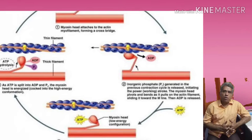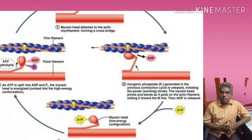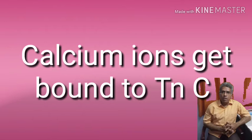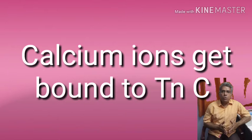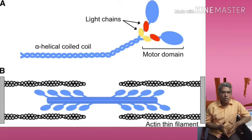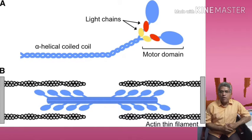Coming to the second step — formation of cross bridges. The calcium ions released from the terminal system get bound to troponin C. In the presence of calcium ions, troponin and tropomyosin are dragged away from the active sites of the actin. There are certain reactive spaces on the actin filaments called active sites, which are ready to bind with myosin heads.